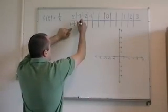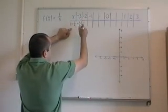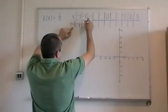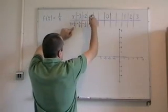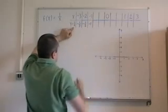When x equals minus 3, we get minus 1 third. When x equals minus 2, we get minus 1 half. When x equals minus 1, I get minus 1.